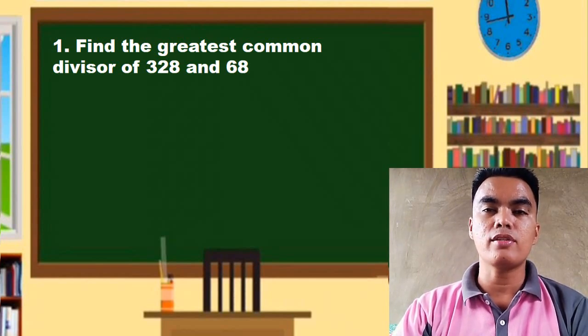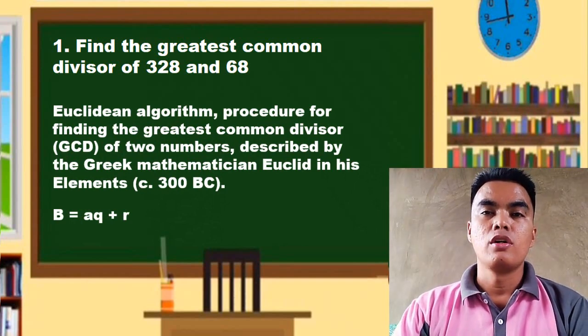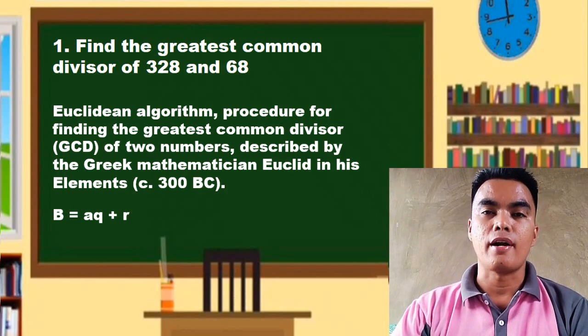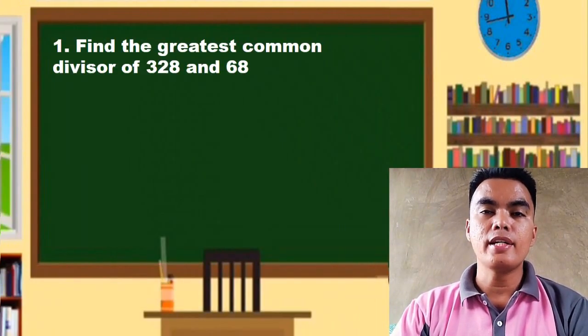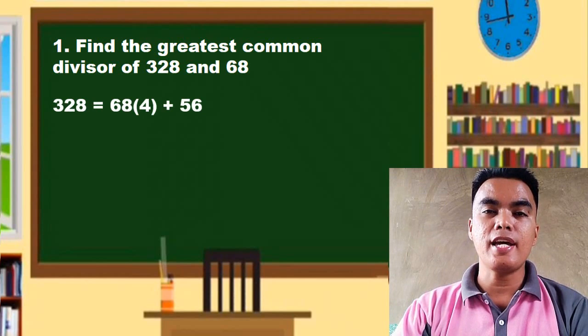of these two numbers using the Euclidean algorithm. We have b equals aq plus r, so b is the greater number and a is the lesser number. So we have 328 and that is equal to 68...